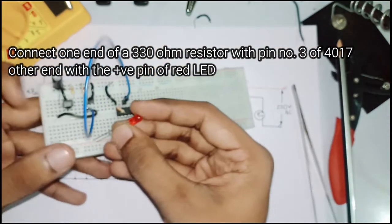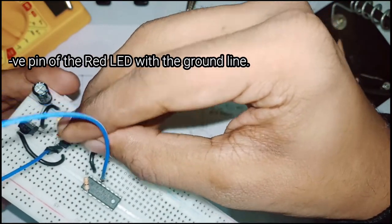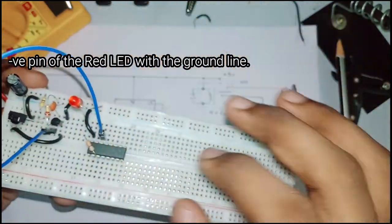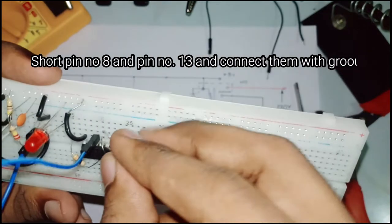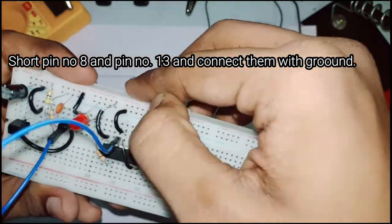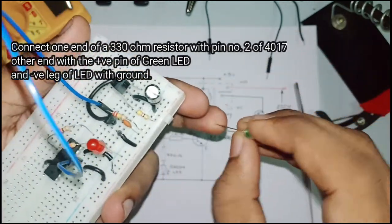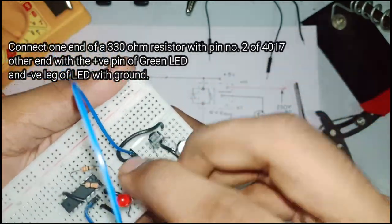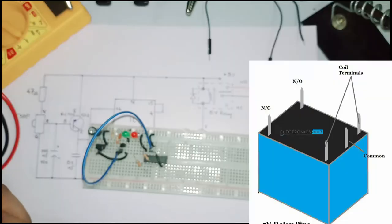Now how do we provide the clock pulse? We are using a 220 kilo-ohm resistor and a capacitor of value 0.1 microfarad for that. Also, we have used a red LED at the first output and a green LED at the second output of the 4017 IC, and they indicate the on-off state of our device.